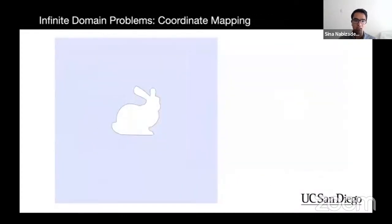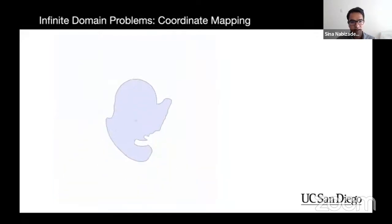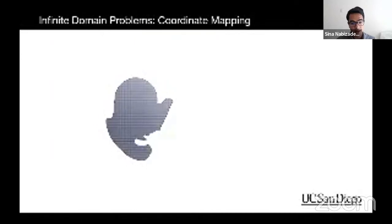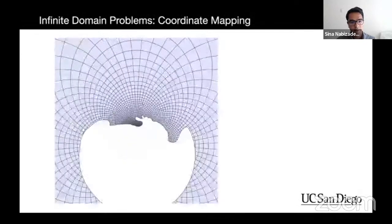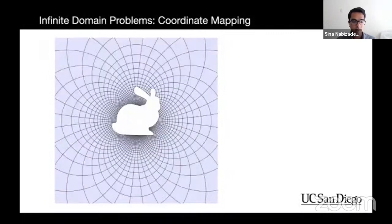Yet another approach is coordinate mapping. To solve for the infinite domain around a bunny, we first invert the domain, then discretize it, and invert back. This results in an adaptive curvilinear coordinate covering the domain. However, squeezing the infinite domain to a finite one introduces non-smoothness. As a result, most PDEs become unsolvable due to bad conditioning or singularities.